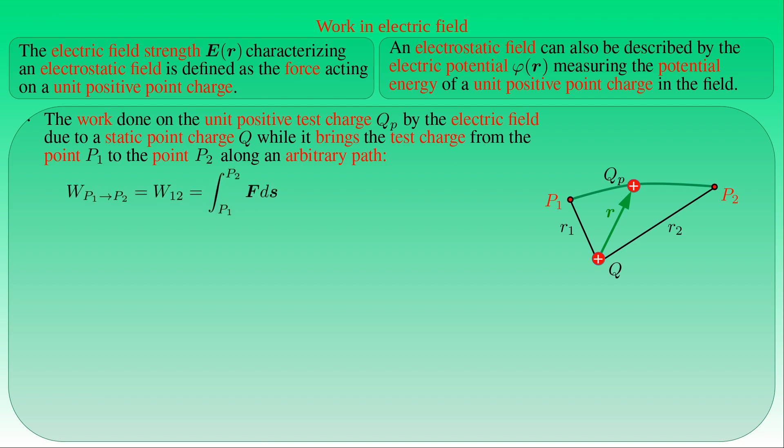The work W done by the field is simply equal to the line integral of the electrostatic force F acting on the test charge QP with respect to the arc length S along the path between points P1 and P2. By definition, the force F acting on the test charge QP is given by the product of the charge QP and the electric field strength E. Without loss of generality, we suppose that both point charges Q and QP are like charges, and the force F always has the same direction as the position vector pointing from point charge Q to the test charge QP.